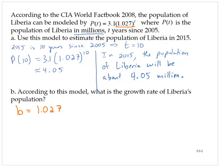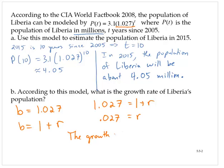Since this is a growth model, we know the base equals 1 plus the growth rate. So 1.027 equals 1 plus the rate. Subtracting 1 from both sides, we find the rate is 0.027. The growth rate is 2.7% per year.